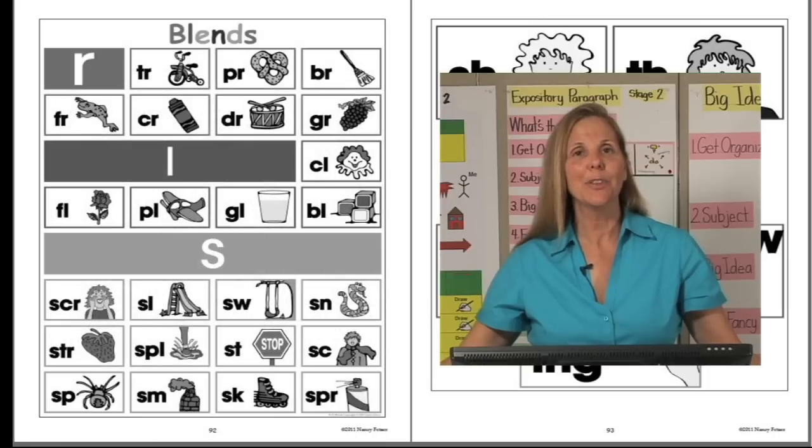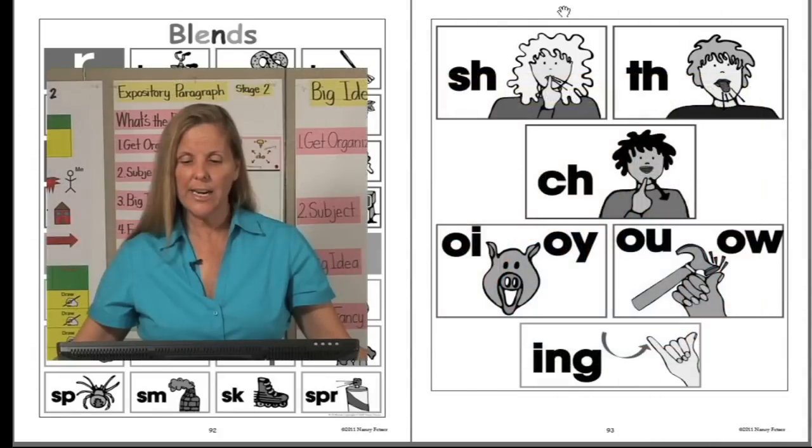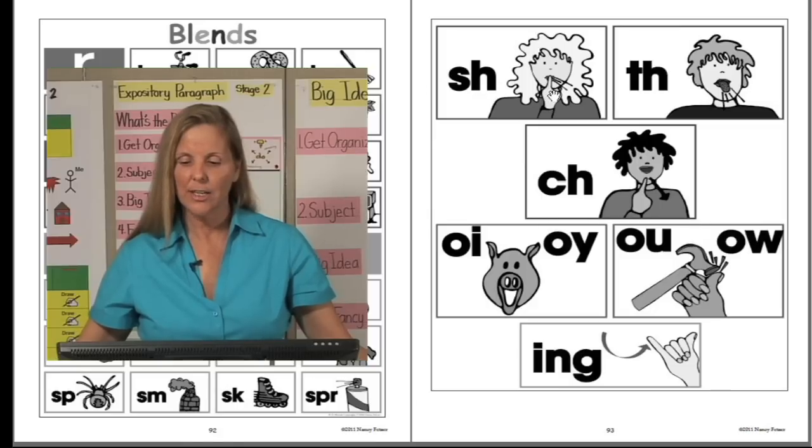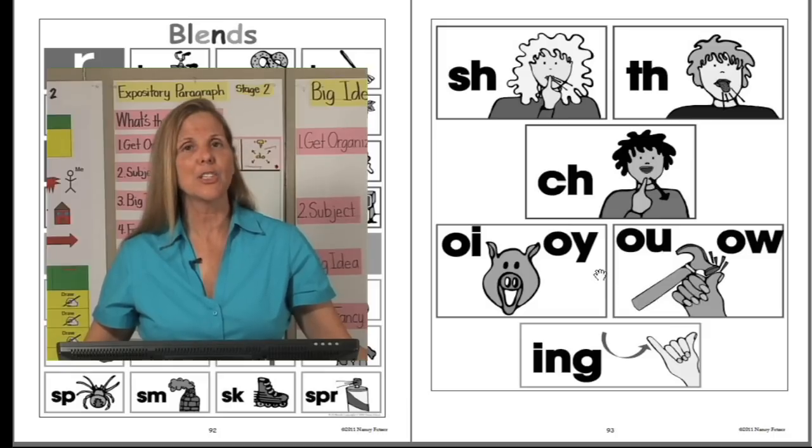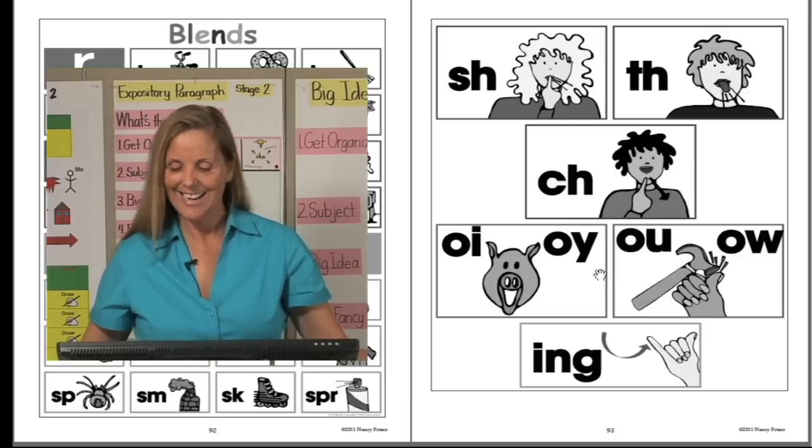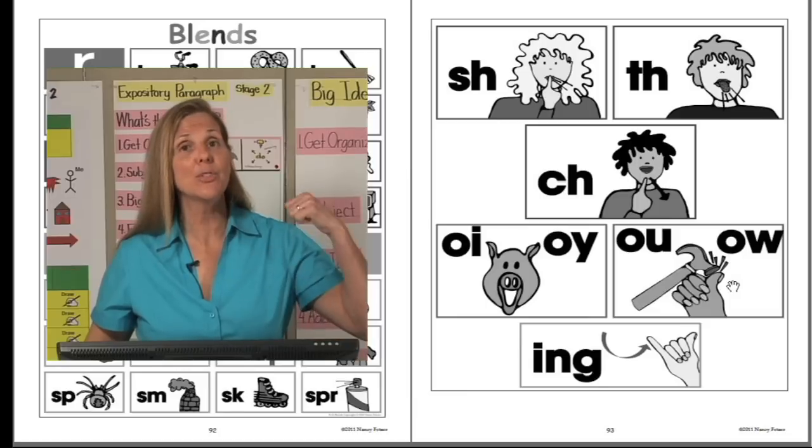In addition to the student size alphabet page that you will get in the free download, we'll also include a blends page and then over here you'll see we have our digraphs, S-H, T-H, and C-H, as well as O-I and O-Y, the diphthong. This is the pig who couldn't say oink, he could only say oy and he lost his voice. Or O-U-O-W for ow, when a hammer hits your thumb, what do you say? Ow.